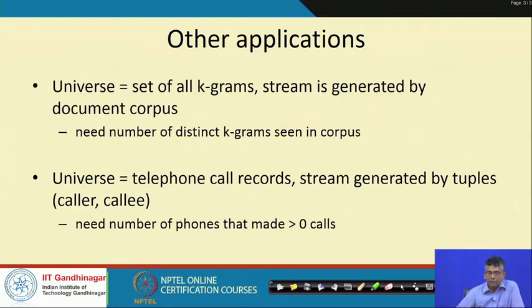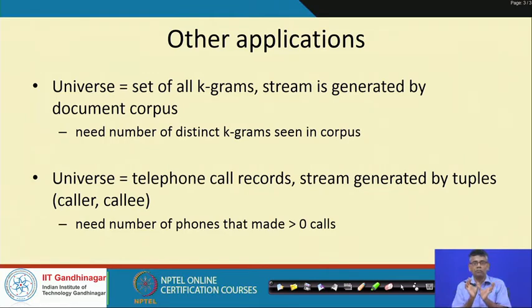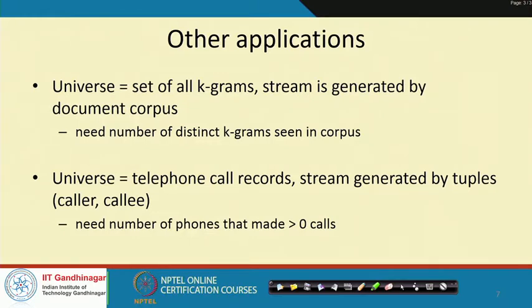Before saying what we do, let us look at a couple of applications. The network switch is one example. Another very common example: suppose you are analyzing a document corpus, and when doing modeling you need to create K-grams — essentially K consecutive bytes from your text data. The stream is generated by this document corpus as you are reading it. In order to create your topic model or natural language model, you need the number of distinct K-grams seen in the corpus. The potential number of distinct K-grams could be huge — there are 256 bytes and 256 to the power K possible K-grams, which is huge even for small values of K.